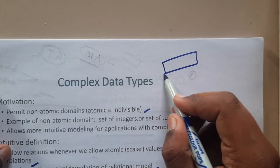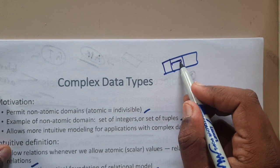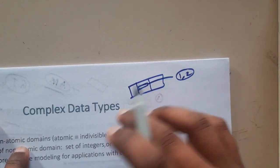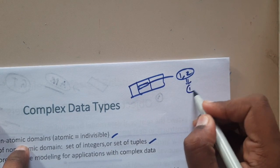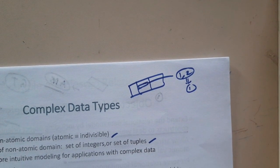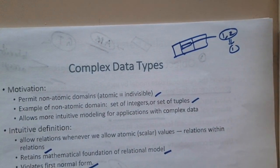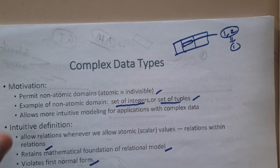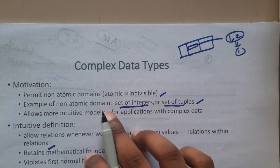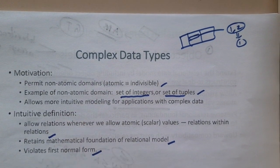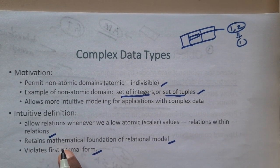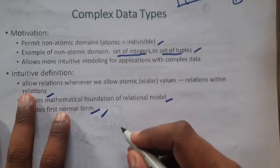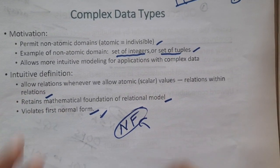In a standard database, you store only a single value in a single row-column address. But with complex data types, you try to store multiple things — a set of integers or a set of tuples — which are non-atomic. The main objective of complex data types is to store non-atomic domain values. The intuition is to store them and maintain relations between them.